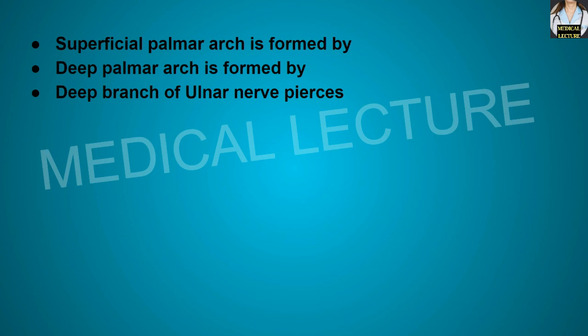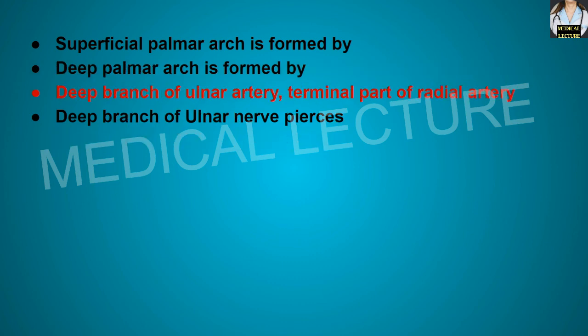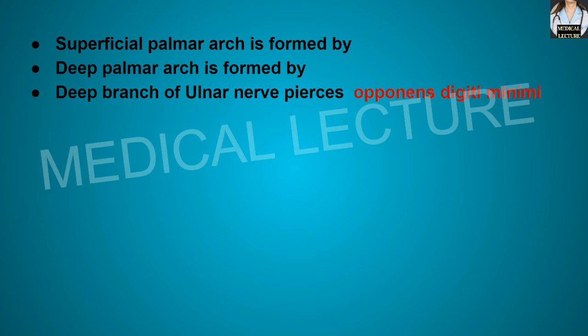Superficial palmar arch is formed by the ulnar artery, superficial palmar branch of the radial artery, arteria princeps pollicis, and arteria radialis indicis. Deep palmar arch is formed by the deep branch of the ulnar artery and the terminal part of the radial artery. The deep branch of the ulnar nerve pierces opponens digiti minimi.